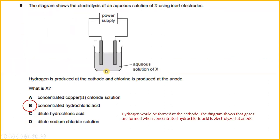The diagram shows the electrolysis of an aqueous solution of X using inert electrodes. Hydrogen is produced at the cathode and chlorine is produced at the anode. What is X? Hydrogen would be formed at the cathode. The diagram shows that gases are formed when concentrated hydrochloric acid is electrolyzed at the anode. So the answer will be concentrated hydrochloric acid.